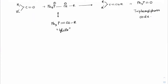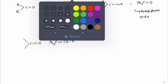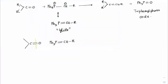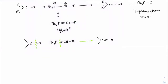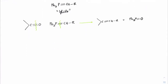Wherever you have C=O and you see Ph₃P=CH-R, break the bond here and connect this part, with oxygen going to the phenylphosphorus group. We get C=CH-R plus Ph₃P=O. This is an easier way to remember the Wittig reaction.